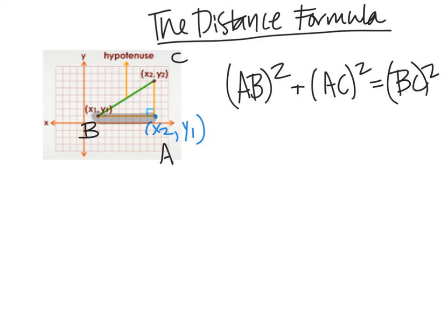So again, going back, using our highlighter, we've got AB squared is here, AC squared is here, so leg squared plus leg squared is equal to hypotenuse squared.